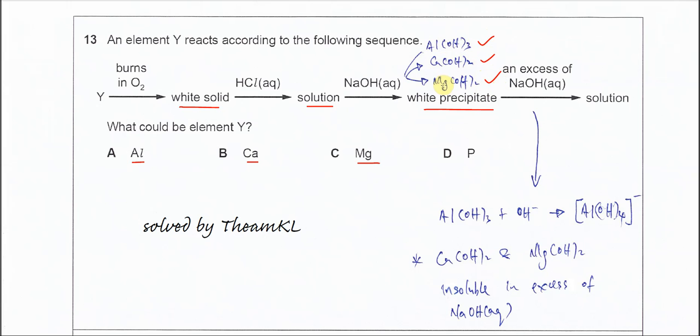After that when sodium hydroxide is added in excess it forms a solution, means the white precipitate dissolves. This means soluble in excess. So we know that aluminum hydroxide will be soluble in excess of sodium hydroxide. The equation is this. Aluminum hydroxide with excess hydroxide will form this compound and this compound is soluble in water.